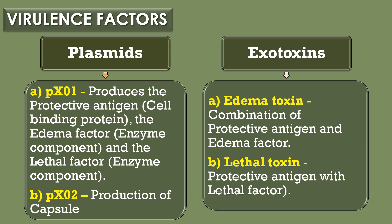The second plasmid, pXO2, encodes the production of the capsule. The second virulence factor is exotoxins. Virulent strains of Bacillus anthracis produce three exotoxins that combine to form edema toxin and lethal toxin.